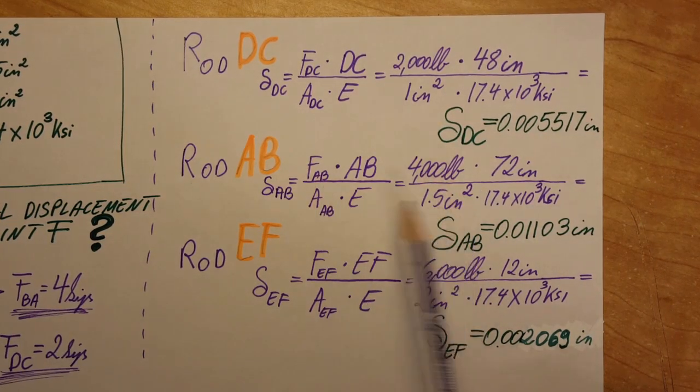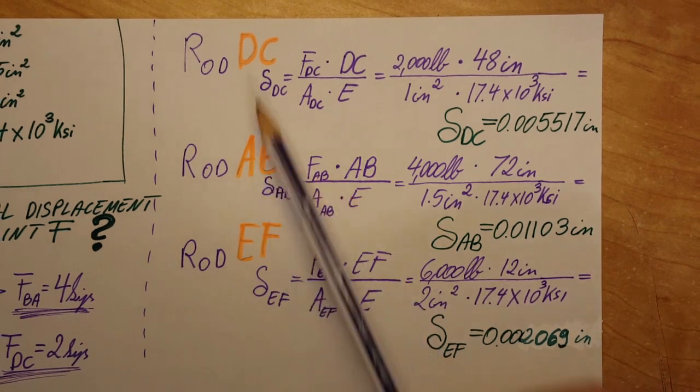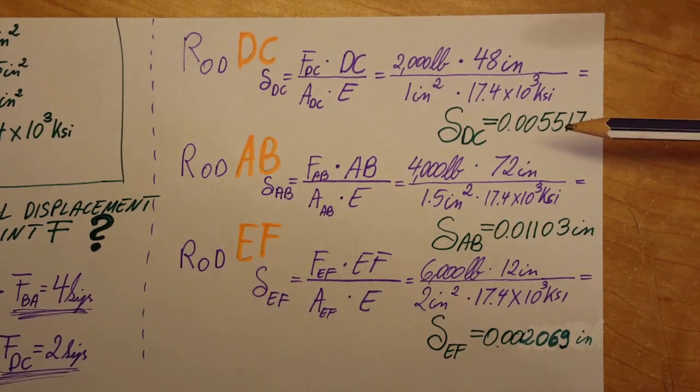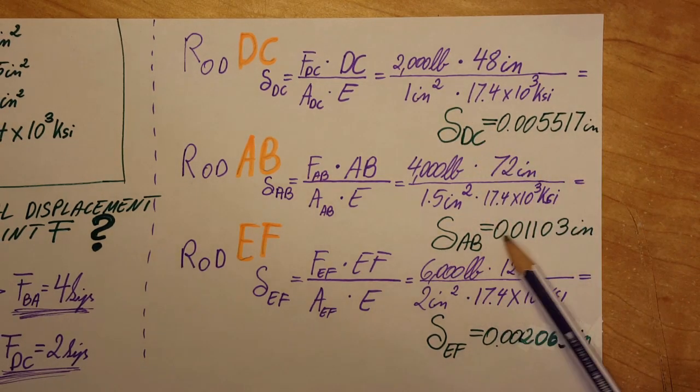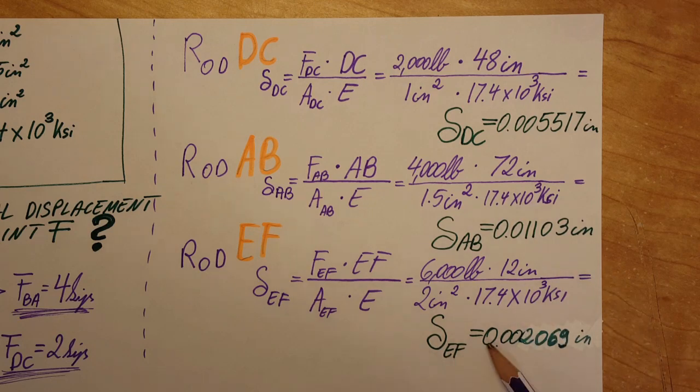I went ahead and plugged in and solved all three rods, and here's what deformations I found for all three of them: deformation for DC, deformation for AB, and deformation for EF.